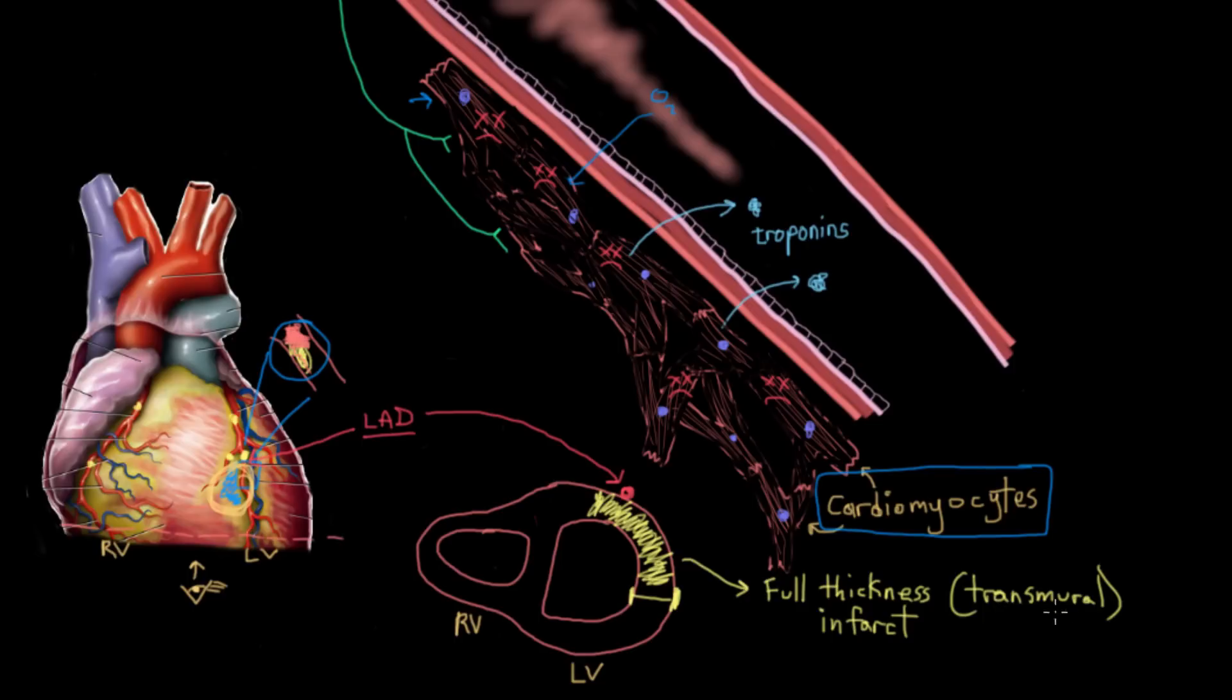That's called a full thickness infarct, or a transmural infarct. Transmural, by the way, just means mural refers to wall, and trans just means crossing. So transmural means it's just crossing the entire wall. That's how big the infarct is, transmural. So that's one type of heart attack.